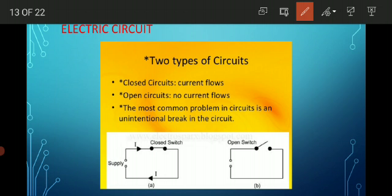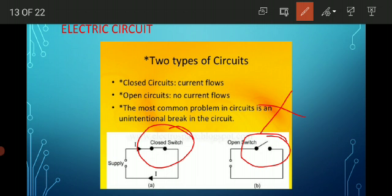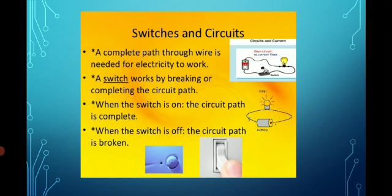When the switch is closed, current will flow — this is a closed circuit. When the switch is open, current will not flow — this is an open circuit. The most common problem in a circuit is an unintentional break in the circuit path. If there is a break in the wiring, current cannot flow. So in a closed switch current flows, and in an open switch current does not flow — there should be no breakage in the path.